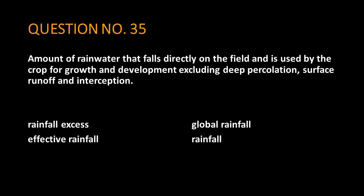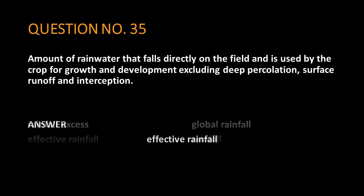Question No. 35. Amount of rainwater that falls directly on the field and is used by the crop for growth and development, excluding deep percolation, surface runoff and interception. The answer is: effective rainfall.